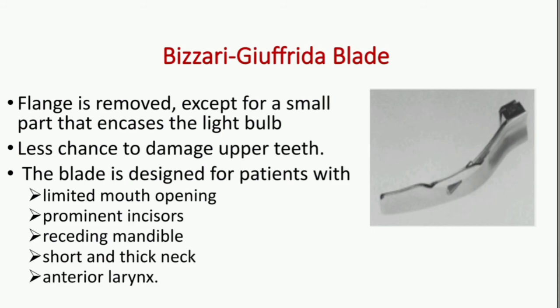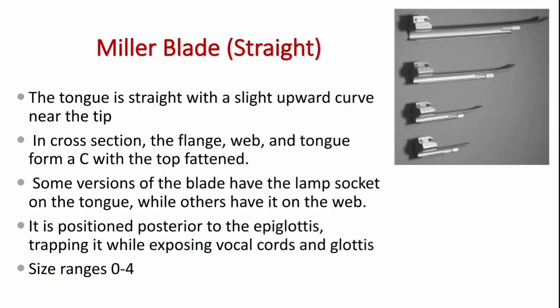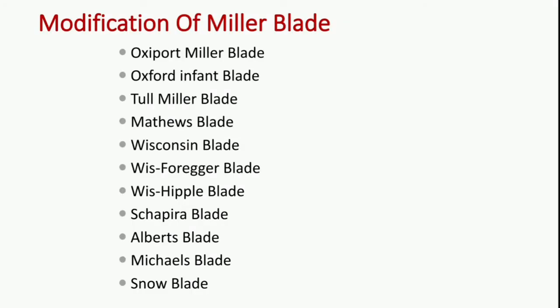The Miller blade is a straight blade commonly used for the pediatric population. The tongue is straight with a slight upward curve near the tip. In cross-section, the flange, the web, and the tongue form a C with the top flattened. Some variations have the lamp socket on the tongue while others have it on the web. It is positioned posterior to the epiglottis, trapping it while exposing the vocal cords and the glottis. The size ranges from 0 to 4. The Miller blade also has its own modifications.